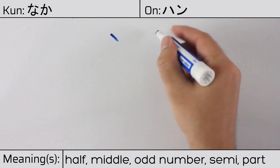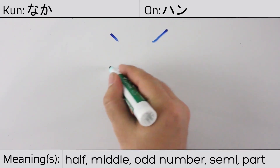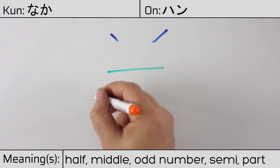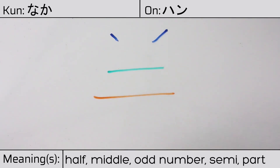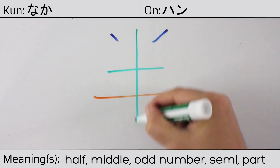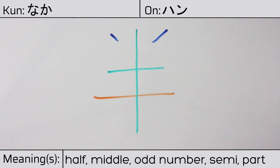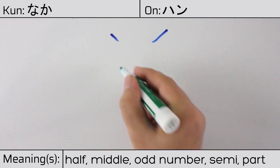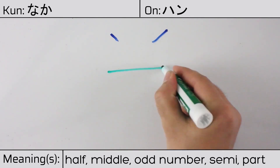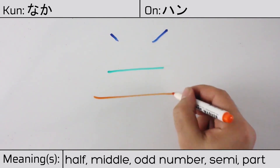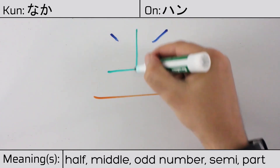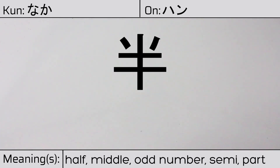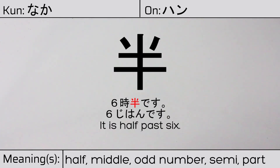This character is made up of the following radicals or parts: two dots at the top, followed by ten or complete jiu, and ichi. You can remember this kanji by the following hint: object divided in two halves, left and right. Our example sentence is: Rokujihan desu — It is half past six.